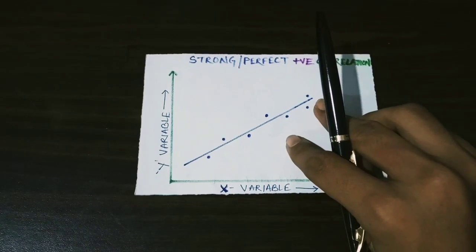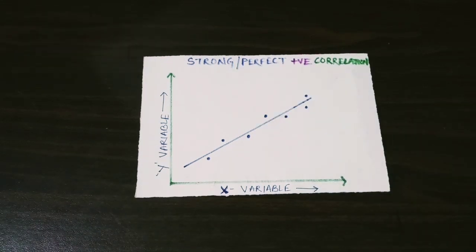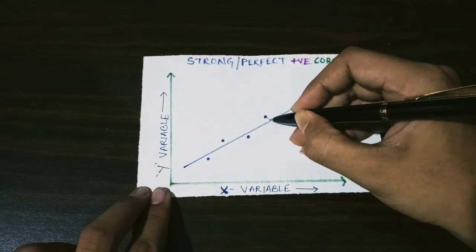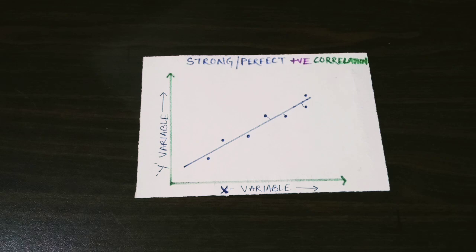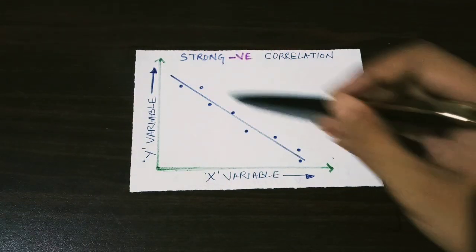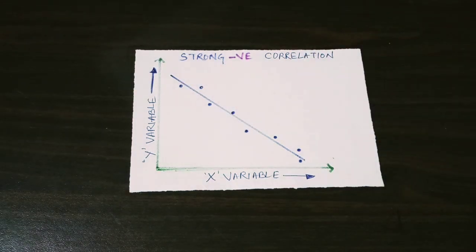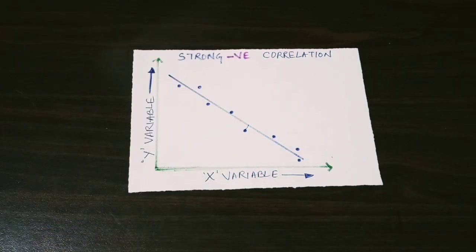There are two more important examples. One is strong or perfect positive correlation — if the points are very close to the straight line, it is called perfect positive correlation, meaning X and Y are very strongly correlated positively. Similarly, strong negative correlation also exists between two variables, where the slope is negatively strong and the points are very close to the straight line.